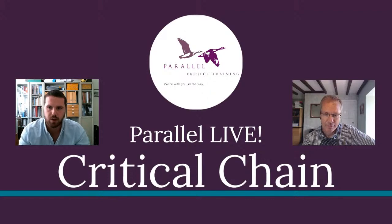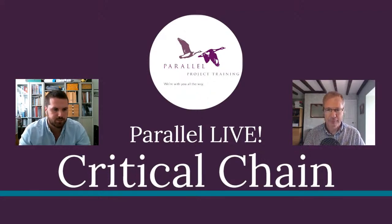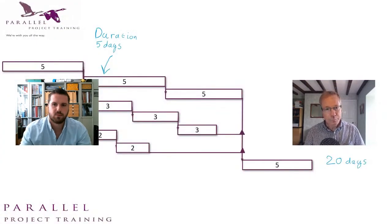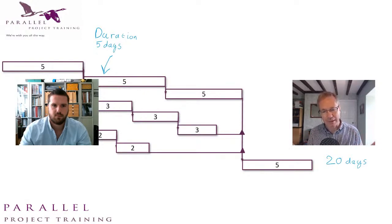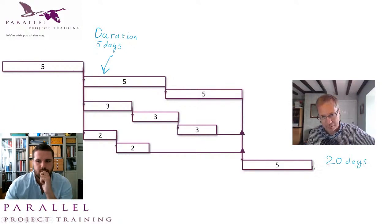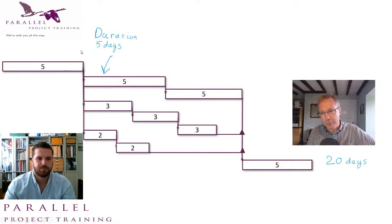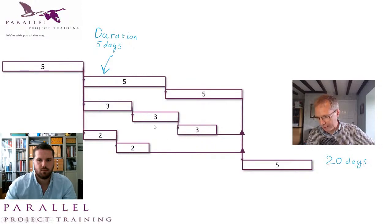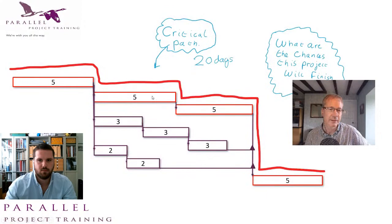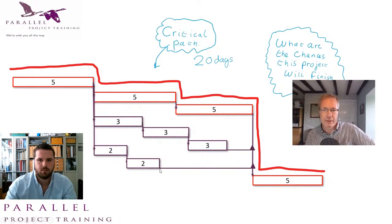So the first picture we need to look at is a review of what critical path is. With critical path, here's a little plan — I've got five days, five days, five days, and five days, so that's the longest path, and then I've got some sub-critical paths. Normally we'd say that's like a 20-day plan. The critical path is the top path, the non-critical paths are the bottom path.